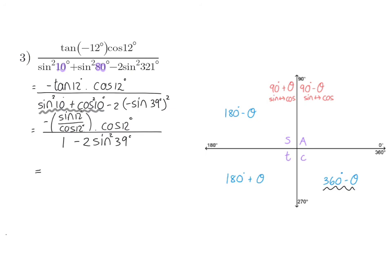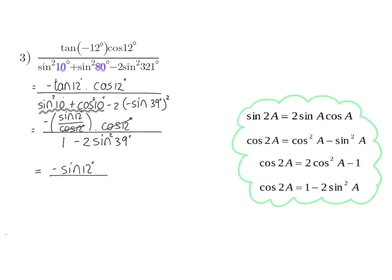If you look closely at your denominator, you will realize that that is the right-hand side of one of our cos double angle identities, so I'm going to change it to the left-hand side, which means I will change it to cos of double the angle, which is 39, and that will be 78 degrees.